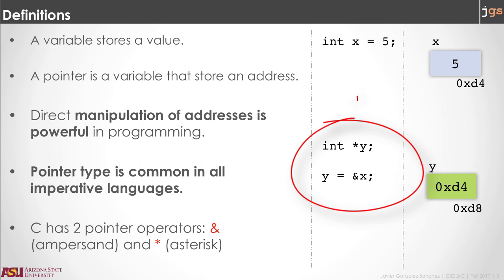To create a pointer, you put this asterisk here between the type and the name of the variable. So int x is an integer variable. Int asterisk y makes y a pointer — a pointer to an integer value. Then you can store in y not a value, but an address.